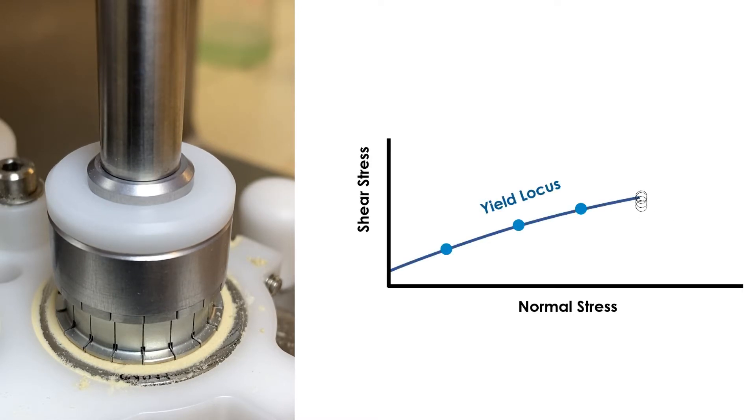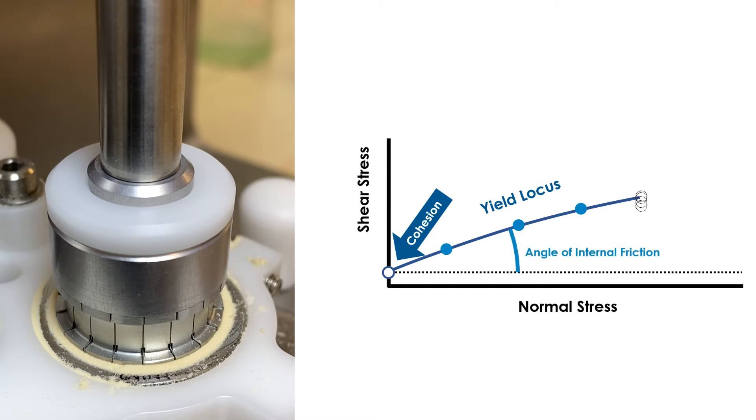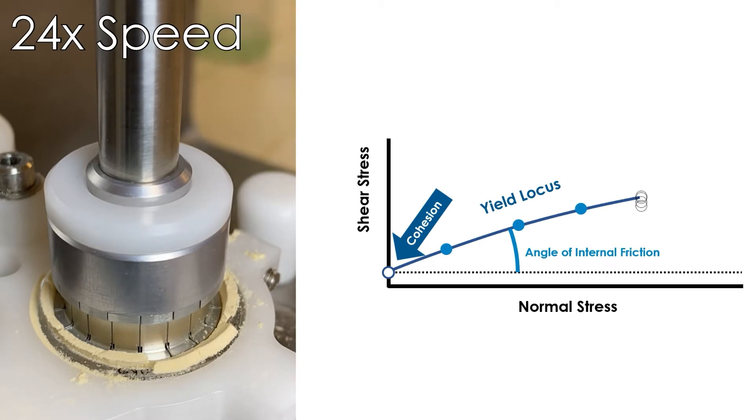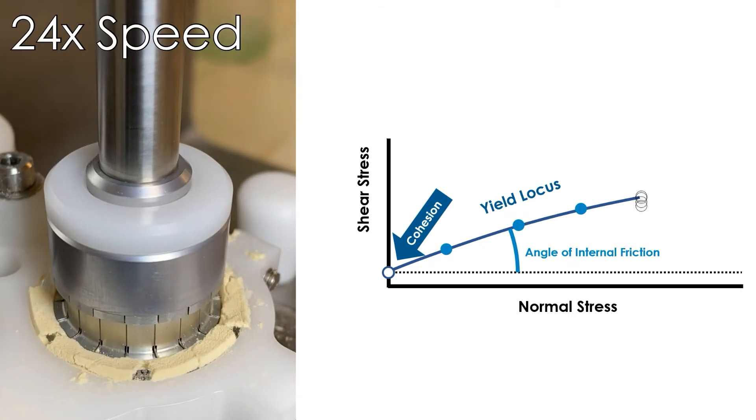From the yield locus obtained, it is possible to quantify key flowability metrics including cohesion and the angle of internal friction. Cohesion can be thought of as the intrinsic strength of a powder mass resulting from particle interactions. The angle of internal friction is a measure of how the powder mass gains strength with increasing load stress.